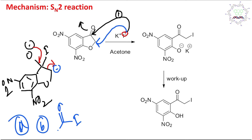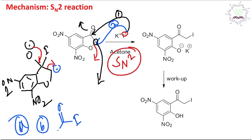The second path — path 2 — is that iodide attacks the carbon attached to the oxygen of the ether ring, and the oxygen leaves. This is a simple SN2-type reaction, and iodide is a good nucleophile, so it can do this reaction very efficiently. The carbon center where the nucleophilic attack happens is not bulky — it is a primary carbon attached to only one carbon. So SN2 reaction happens efficiently, iodide attacks, the O⁻ leaves, and the ring opens to produce an O⁻ species.